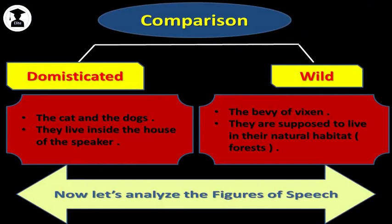Let's draw a comparison between domesticated animals and wild animals. Domesticated animals include the cat and the dogs. They live inside the house of the speaker, while wild animals are the bevy of vixen and they are supposed to live in their natural habitat in forests, for example.